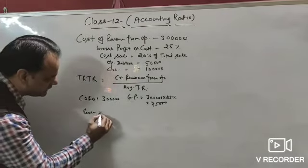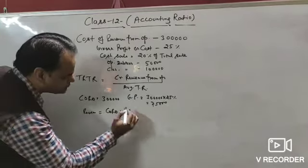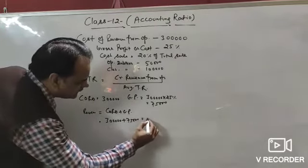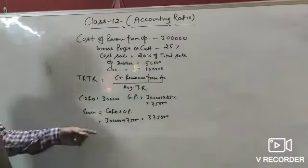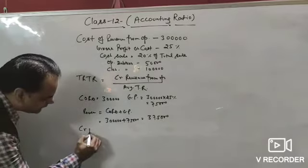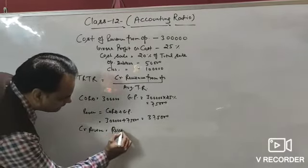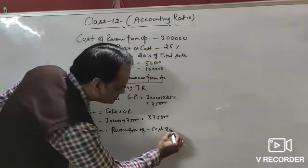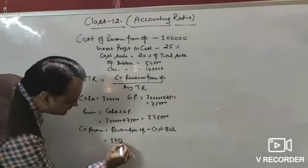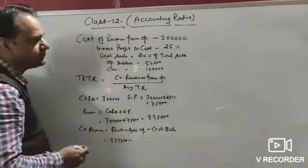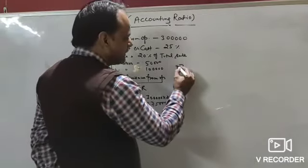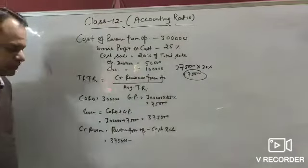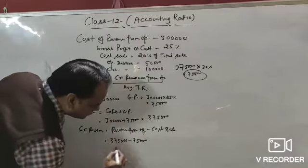Revenue from operation = cost of revenue from operation plus gross profit = ₹3,00,000 + ₹75,000 = ₹3,75,000. Credit revenue from operation = revenue from operation minus cash revenue from operation. Cash sale = 20% of total sale. Total sale = ₹3,75,000, so cash sale = 20% × ₹3,75,000 = ₹75,000. Credit revenue from operation = ₹3,75,000 − ₹75,000 = ₹3,00,000.